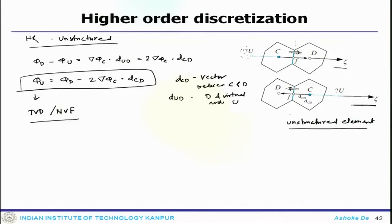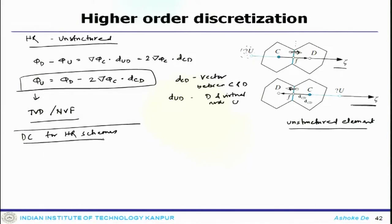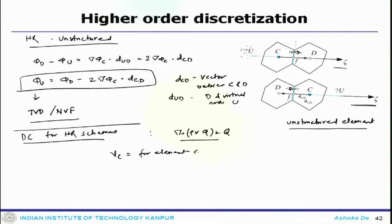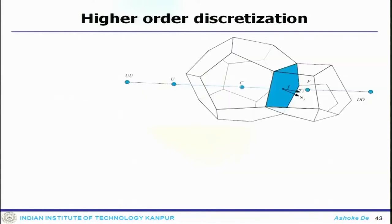Before moving on, one important topic to discuss is deferred corrections for high-resolution schemes. The implementation of these schemes can be understood through an example. Consider the multi-dimensional advection equation: ∇·(ρVφ) = Q, with a source term — this is the conservation equation. One can take the element volume V_C for element C and apply the divergence theorem.